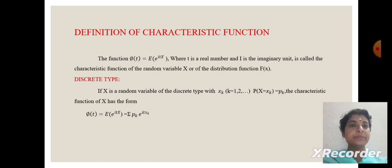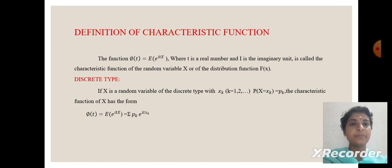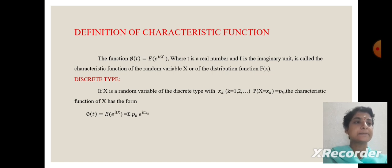Discrete case: if x is a random variable of the discrete type with x of k, probability of x equal to x of k equal to p of k, the characteristics function of x has the form pi of t equal to expectation of e power i tx equal to sum of p of k times e power i tx sub k.